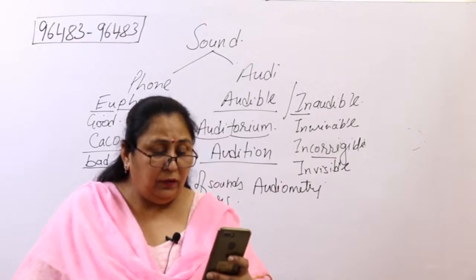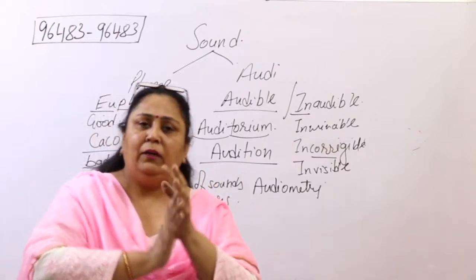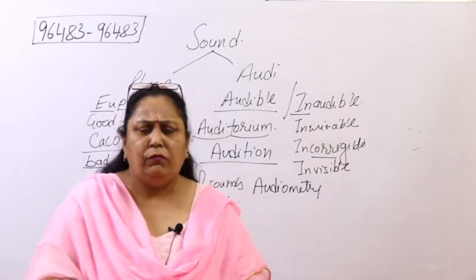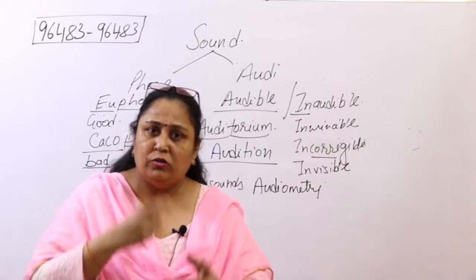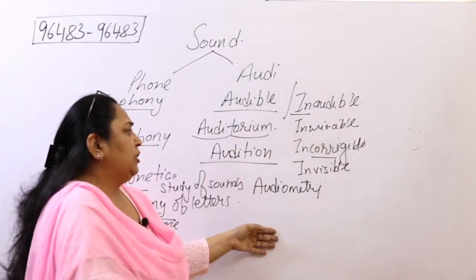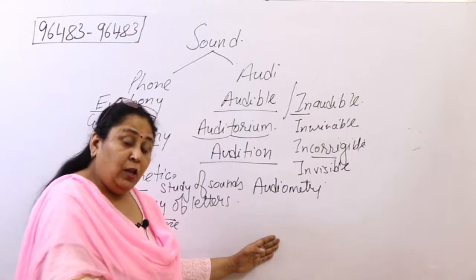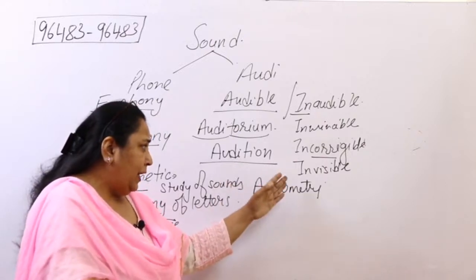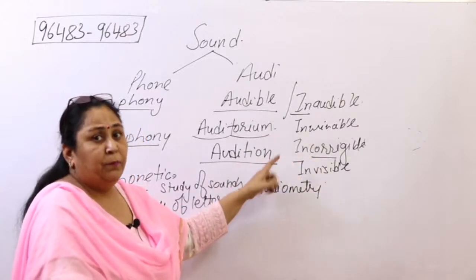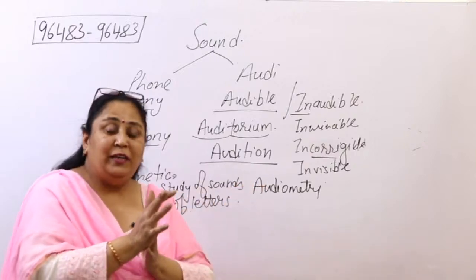We will cover the 'vision' root next time as it deserves a full explanation. Next class, we will also teach you how to derive many roots from a single root — like today with the 'in' negative prefix. The 'in' prefix makes words negative: inaudible, invisible, invincible, incorrigible. Similarly, 'im' works the same way, as in impossible. These are called negative prefixes — pre means before, fix means to attach, so they are attached before the root word.